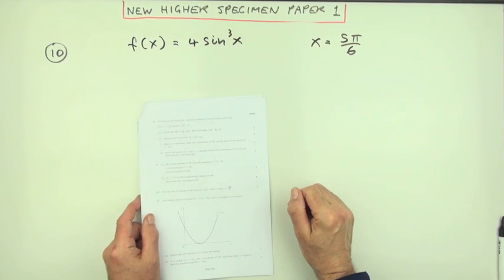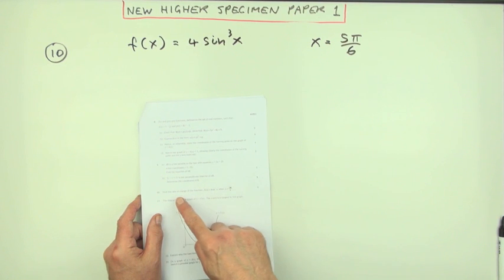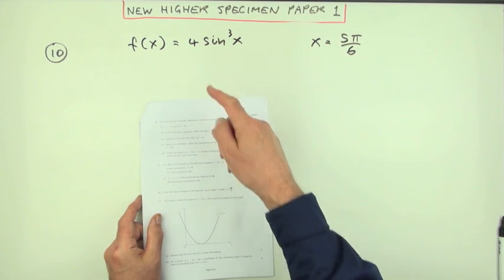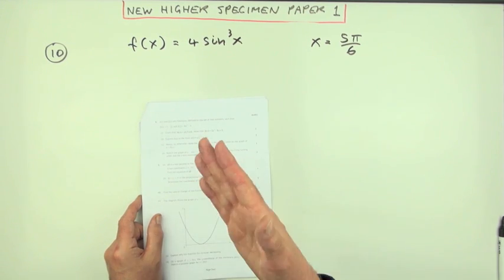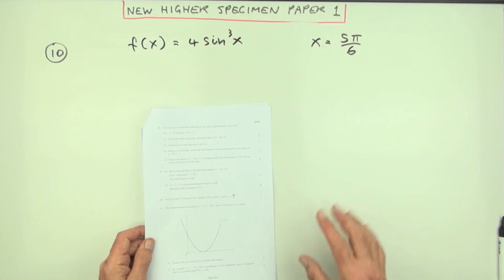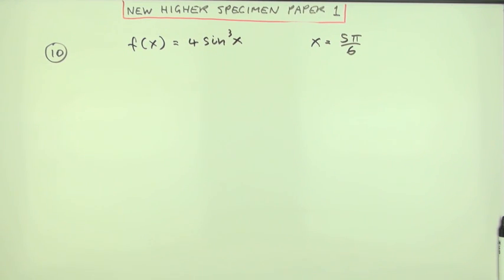Number 10 from this new higher specimen paper 1. We've got rate of change when you've got a trigonometric expression which actually is a function of a function, and you've also to evaluate it, but all just for three marks. I think this question's a little bit harsh in what you have to do for those three marks.